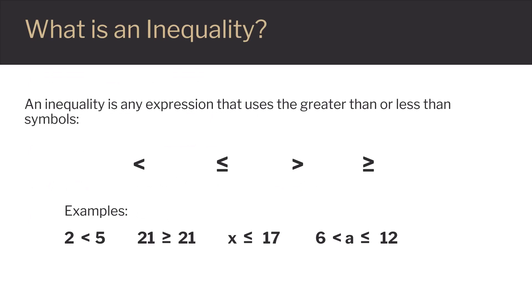An inequality is an expression that uses the greater than or less than symbols. The symbols with the line underneath mean greater than or equal to and less than or equal to. The examples here show how to use the symbols. The first example is read: two is less than five. The smaller end of the symbol points to the smaller number. The next example is read: 21 is greater than or equal to 21.